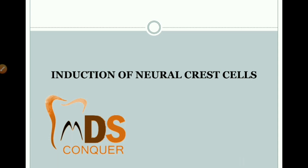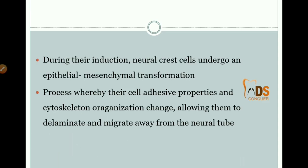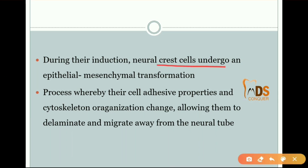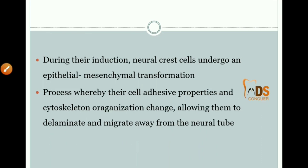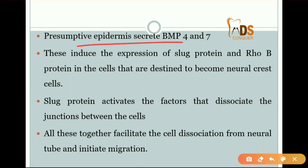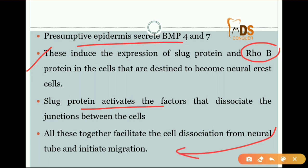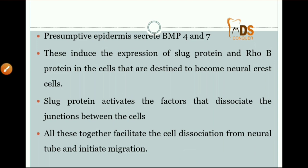Coming to the induction of neural crest cells: during induction, these cells will undergo an epithelial to mesenchymal transformation. After that, their cell adhesive properties and cytoskeleton organization will change, allowing them to delaminate and migrate away from the neural tube. The presumptive epidermis will secrete bone morphogenetic proteins four and seven, which induce the expression of the slug protein and RhoB. The slug protein will activate factors that dissociate the junctions between cells, facilitating cell dissociation from the neural tube and initiating migration of the neural crest cells.